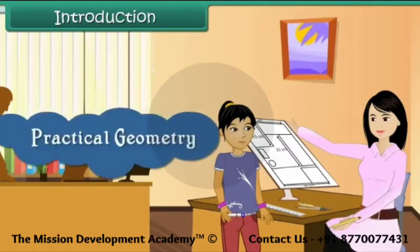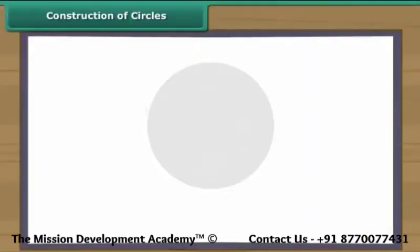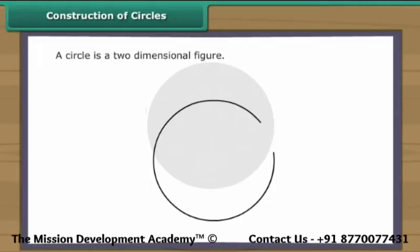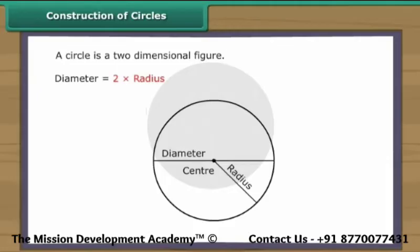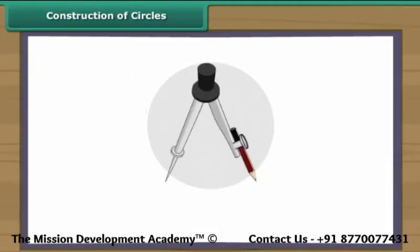In this lesson, you will learn practical geometry. Construction of Circles. A circle is a two-dimensional figure. Every circle has a center. The distance between the center and the boundary of a circle is known as its radius. The line segment through the center of a circle with its endpoints touching the boundary is known as the diameter. The diameter of a circle is twice its radius. We draw circles with the help of a compass.